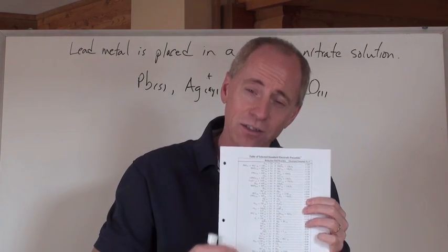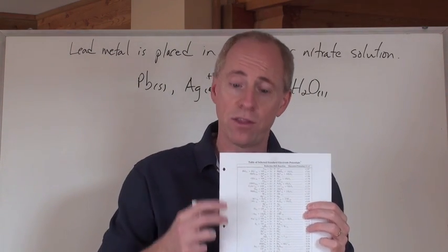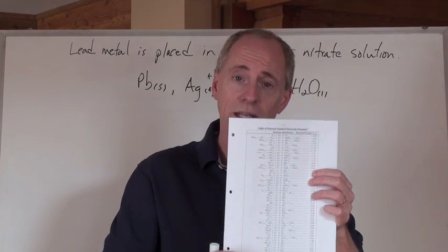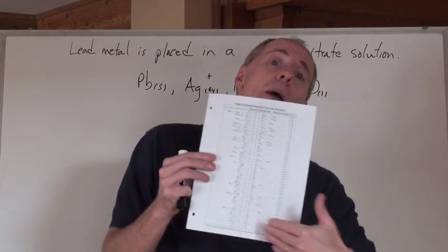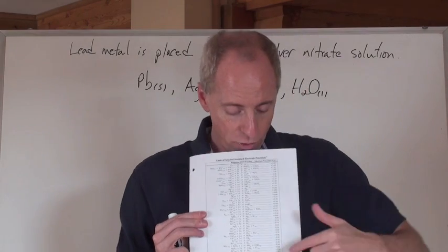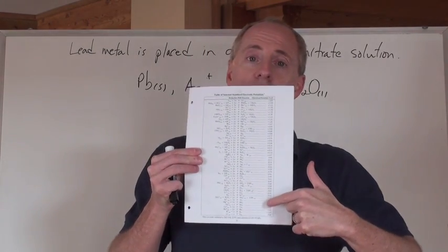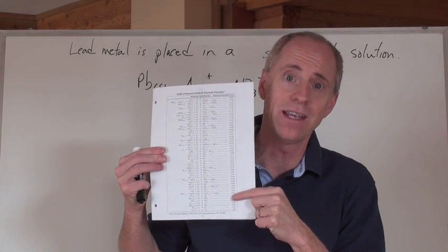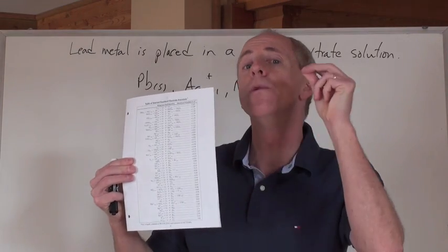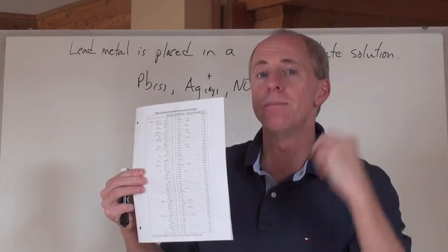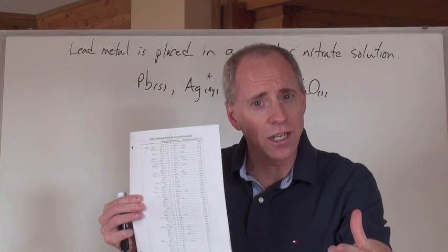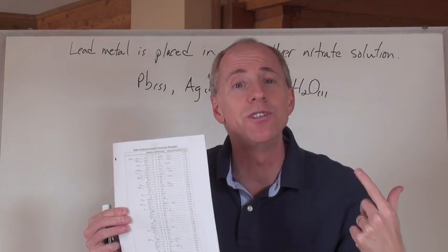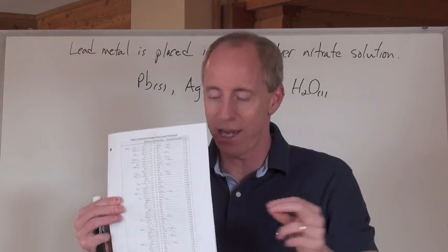So the oxidizing agents are listed in terms of strength going from strongest to weakest down the left side. But then, conversely, on the opposite side of the chart, on the bottom right corner, that's where you find the thing that wants to lose electrons the most. And if you're losing electrons, you're undergoing oxidation. And if you're undergoing oxidation, you are a reducing agent.